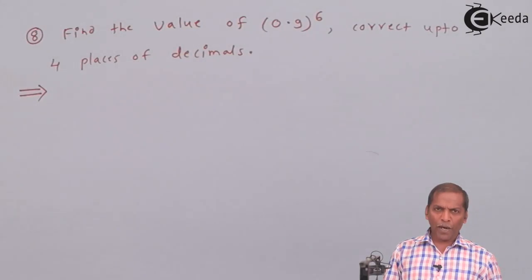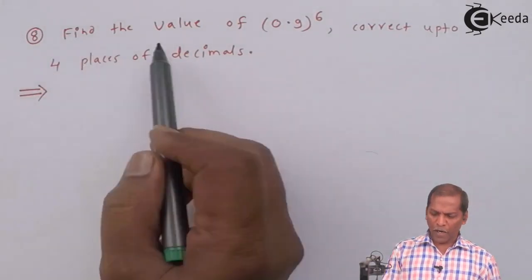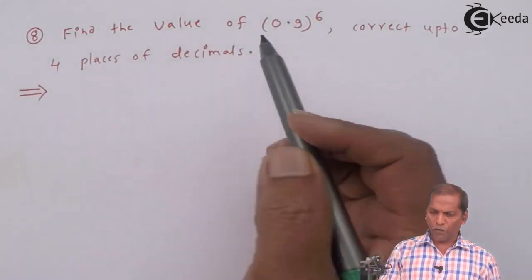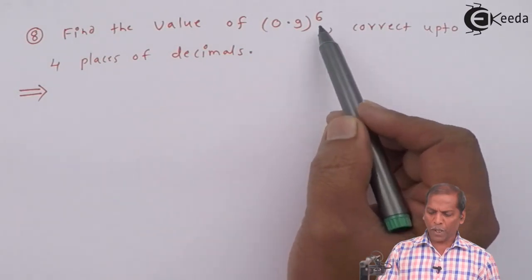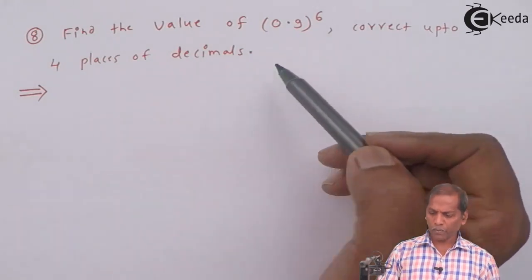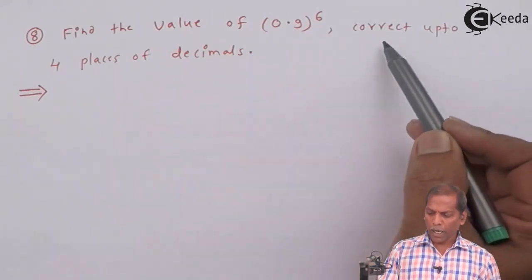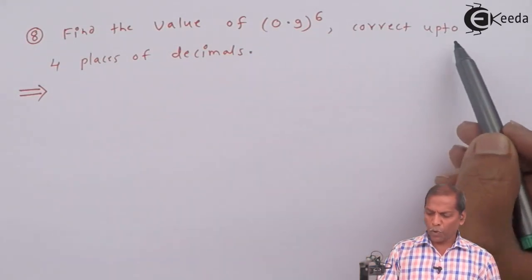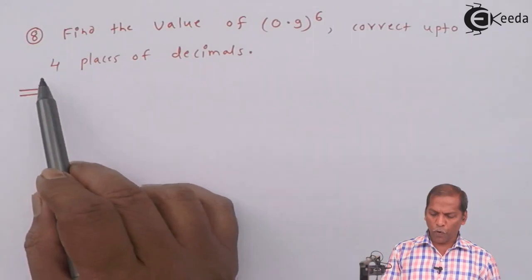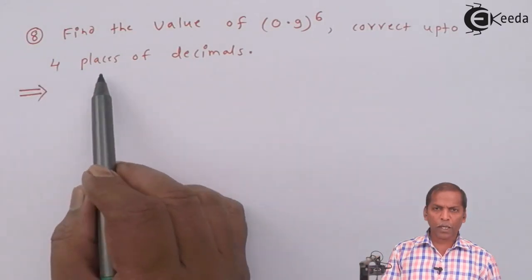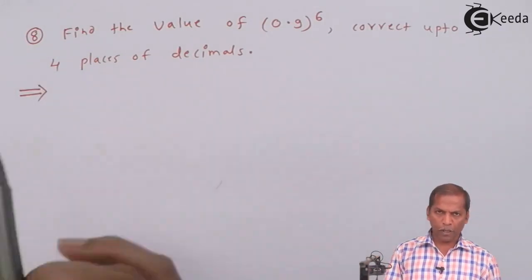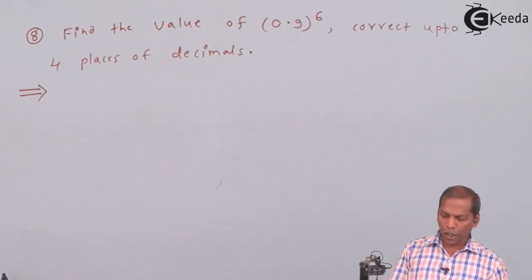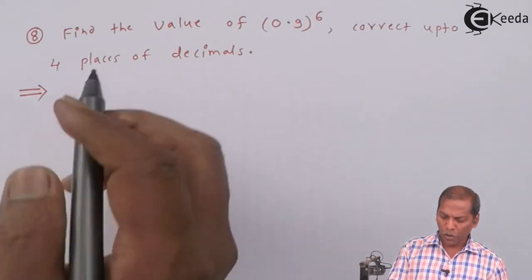Problem number 8: find the value of 0.9 raised to the power 6, correct up to 4 places of decimals. Now let's see the solution.